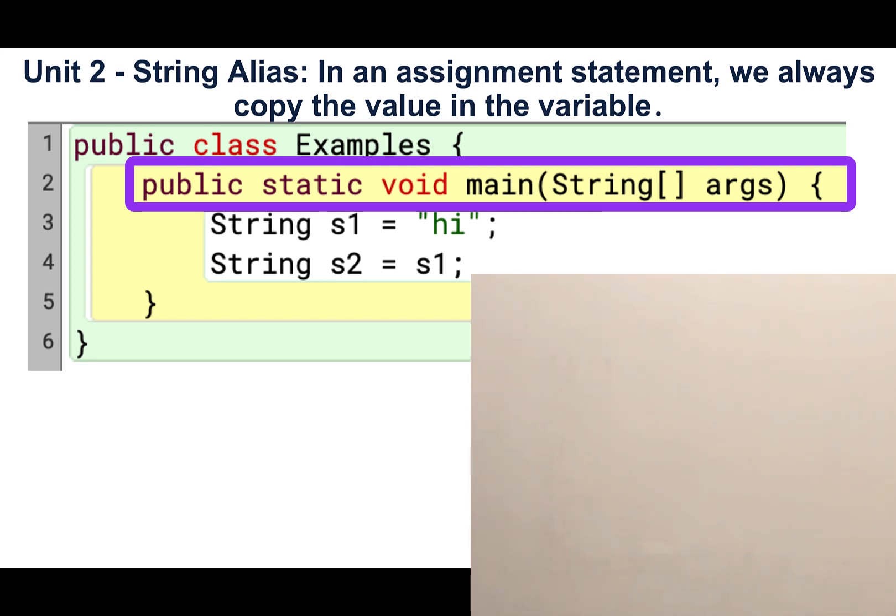When we run our class, we run the method public static void main string square bracket args. I drew a box for all the local variables inside the main method. I labeled it with the name of the method, main.